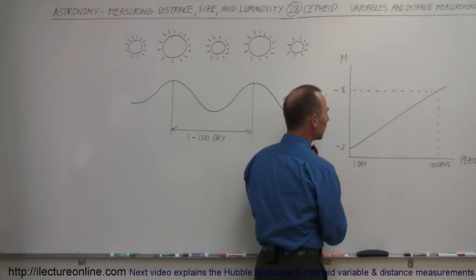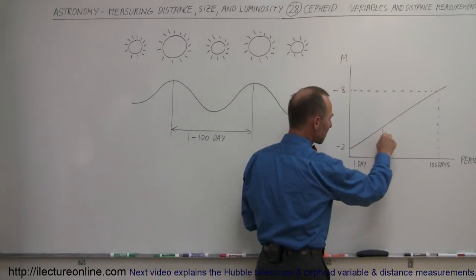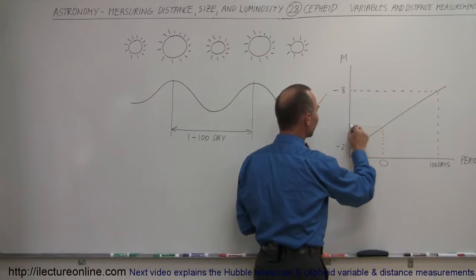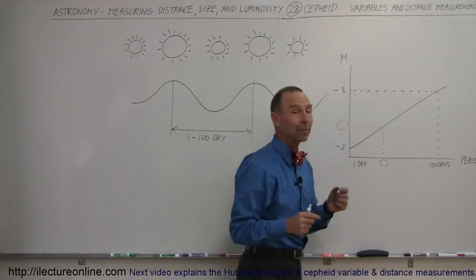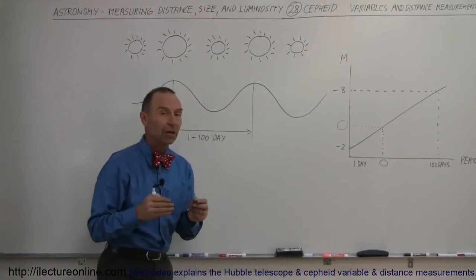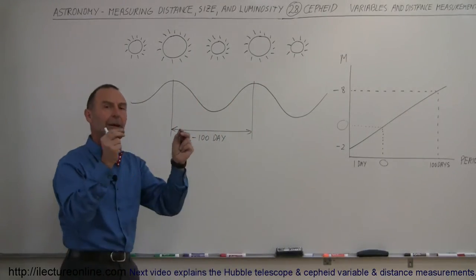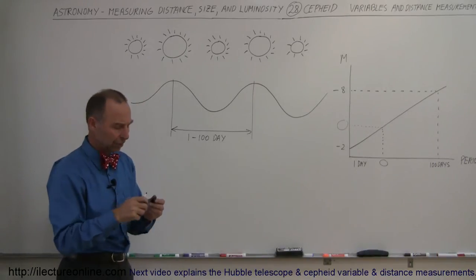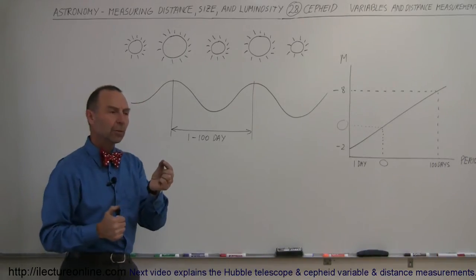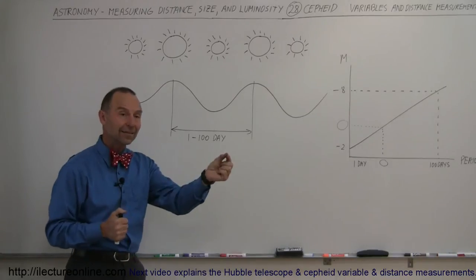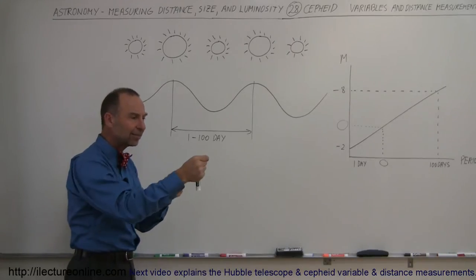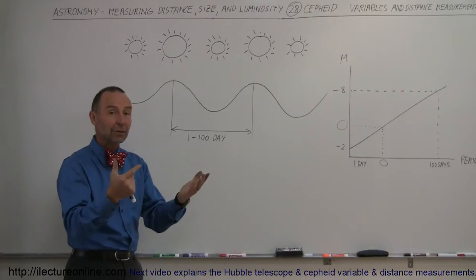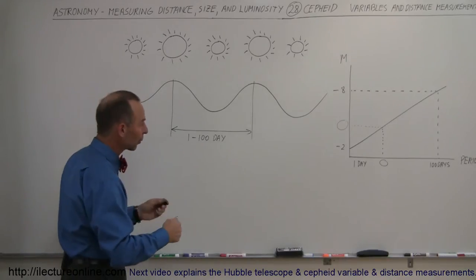All we have to do is find a Cepheid variable and watch it become brighter and dimmer. We measure the periodicity, then use the period-luminosity relation to find the absolute magnitude. Once we have the absolute magnitude, we measure the apparent magnitude, and from those two values we can find the distance to that Cepheid variable. If that Cepheid variable exists in another galaxy, we then know the distance to that galaxy.